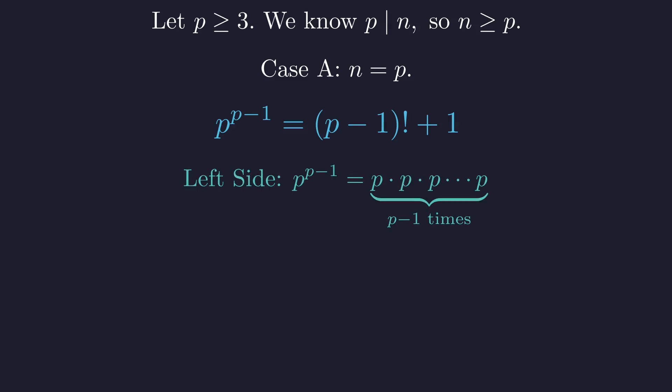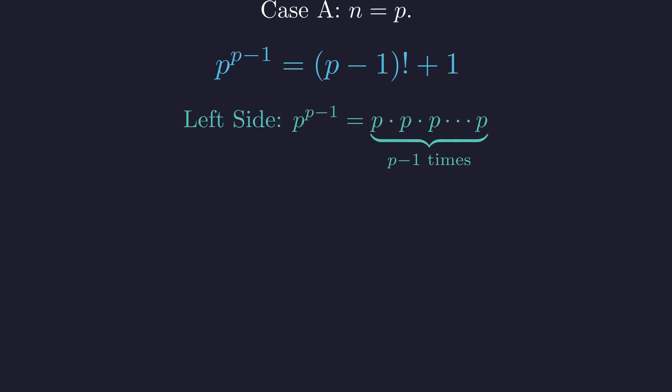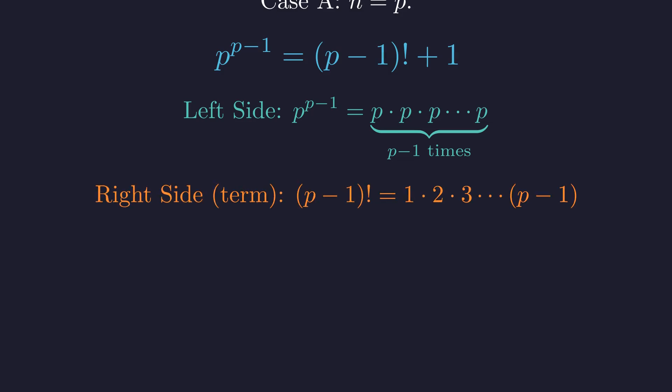The left side is a product of (p-1) terms, where every single term is p. The factorial on the right side is also a product of (p-1) terms, but they are 1, 2, 3, and so on, up to (p-1).